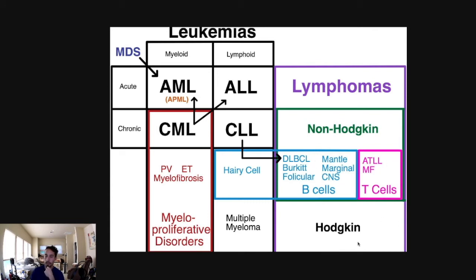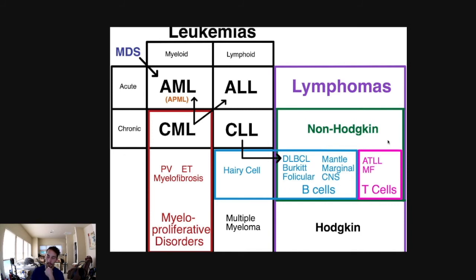For lymphomas, you have non-Hodgkin's and Hodgkin's lymphomas. There's less to know about these for the Step 2 exam. For the Step 1 exam, it's still important to know which translocation — Pathoma does a great job with that: 8;14, 11;14, those kinds of things. T-cell lymphomas are even more rare. MF stands for mycosis fungoides, which can manifest in the skin. I think T-cell disorders are relatively low yield for the exams. Hodgkin's lymphoma encompasses the lymphomas that don't fit those categories, and the key thing to remember is the Reed-Sternberg cells on microscopy — that will be the key identifier for Hodgkin's lymphoma.